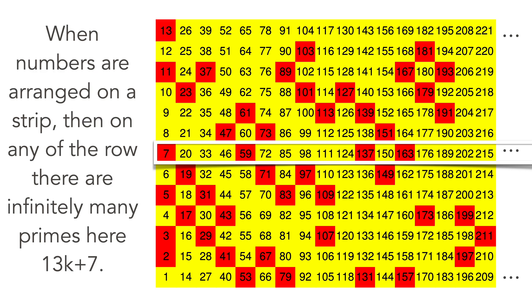7, 20, 33, 46. There are infinitely many primes on this row.